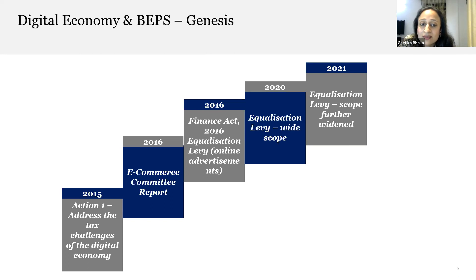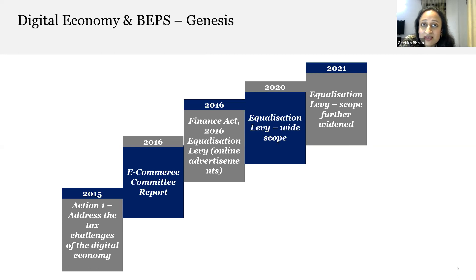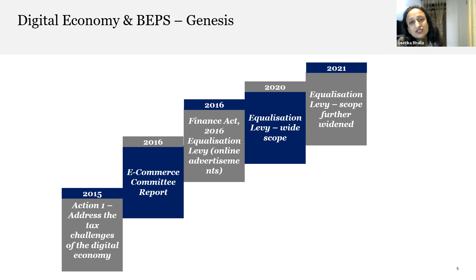The uniqueness of the digital e-commerce model makes it impossible to tax them under traditional PE rules. These online operations do not get taxed, which is known as erosion of the tax base. Governments all over the world are grappling with the tax issues raised by e-commerce companies, primarily due to the complex nature of business conducted through the internet. Business models have evolved, but not the taxing methods — the traditional concepts of PE and taxing rules are just not sufficient to tax cross-border transactions.